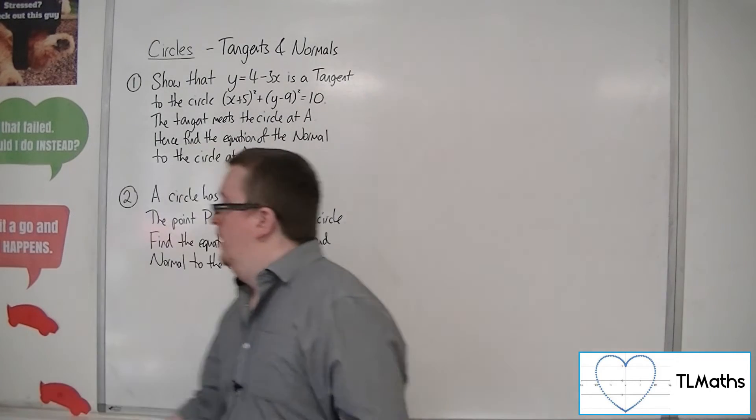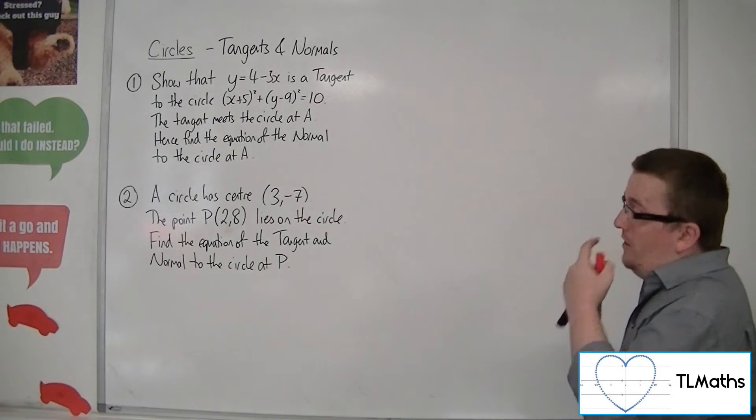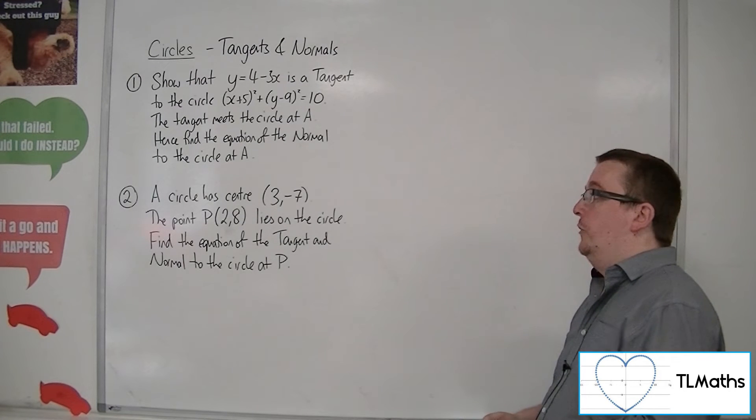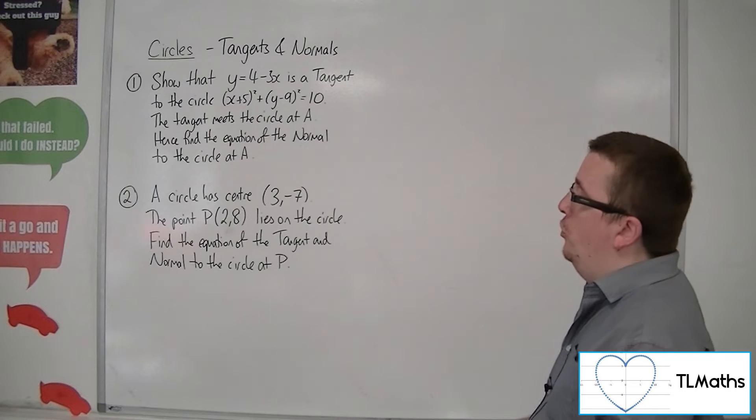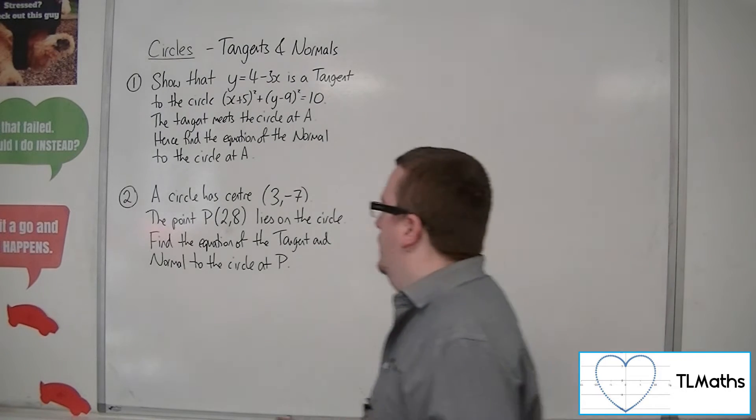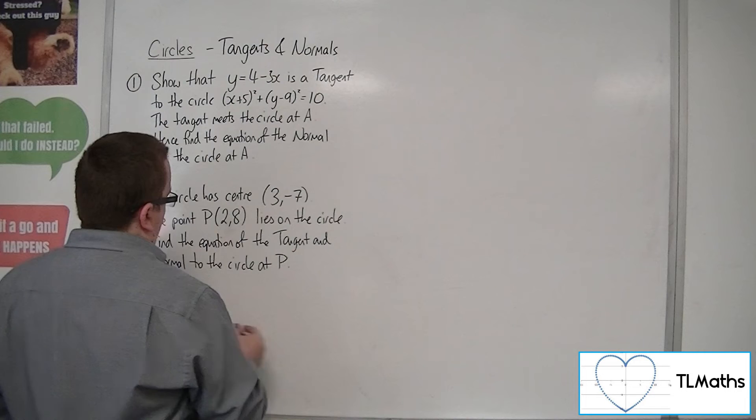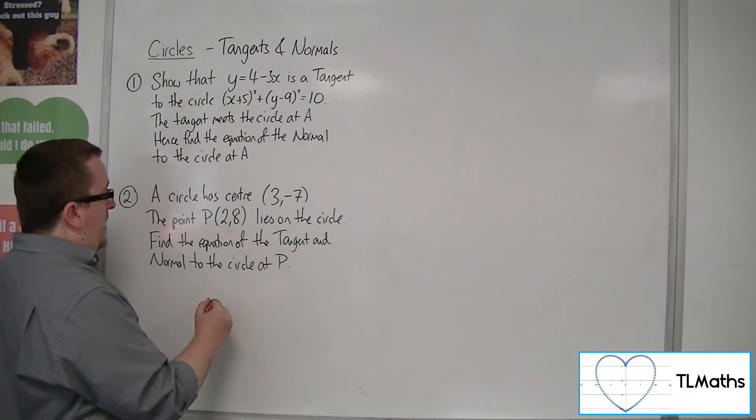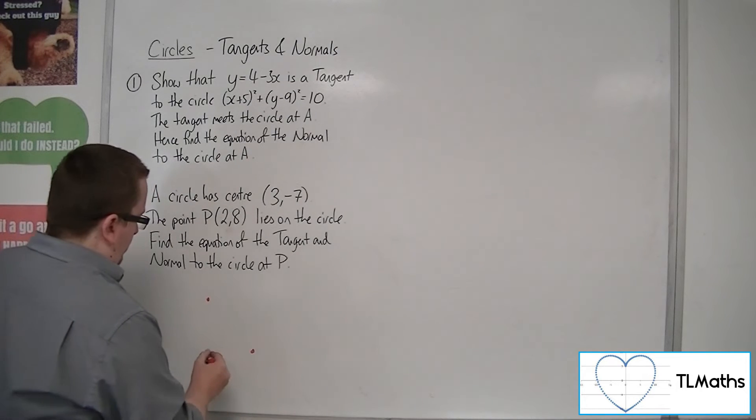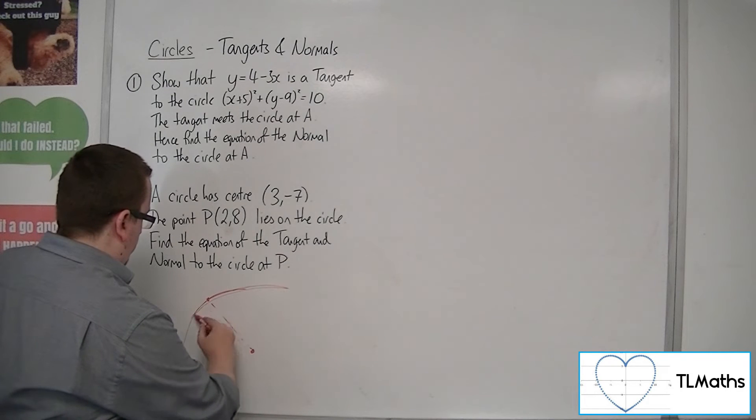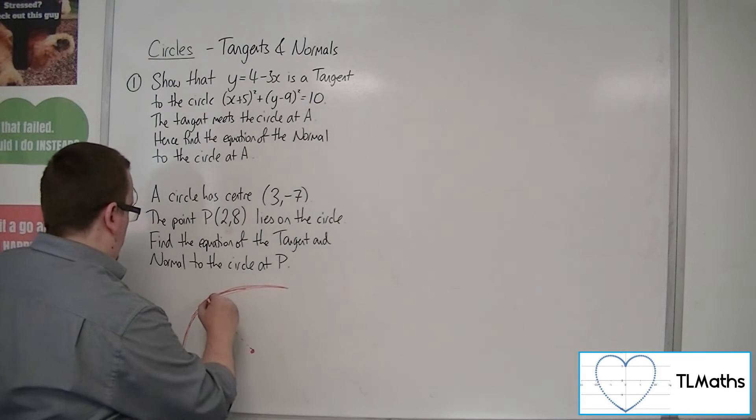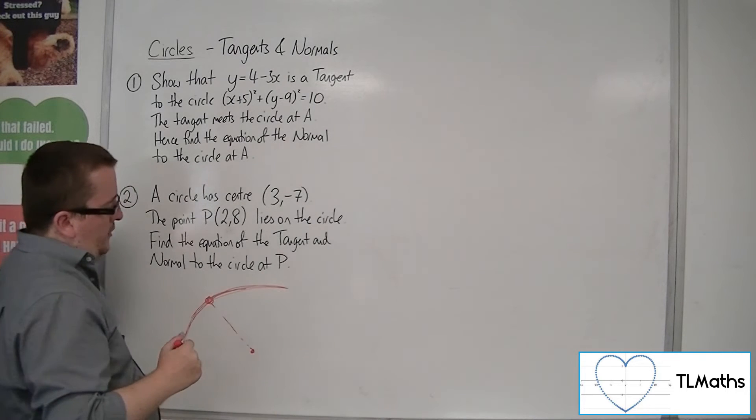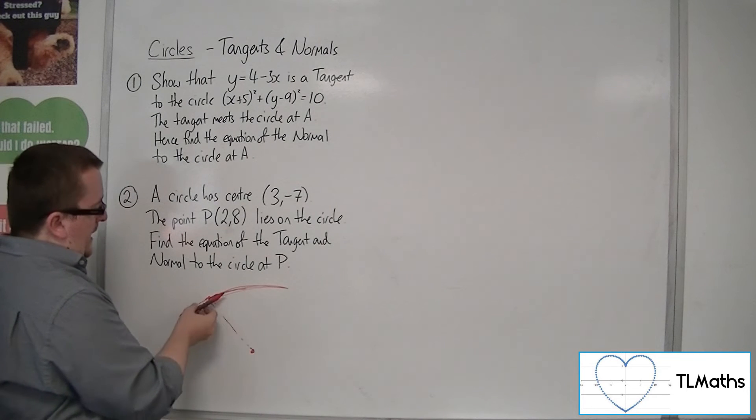Right, number 2. A circle has centre 3 minus 7. The point P(2,8) lies on the circle. Find the equation of the tangent and normal to the circle at P. So 3 minus 7, 2, 8. So 2, 8 is going to be up here. 3 minus 7 is going to be somewhere down there. So this is your circle, going through that point.